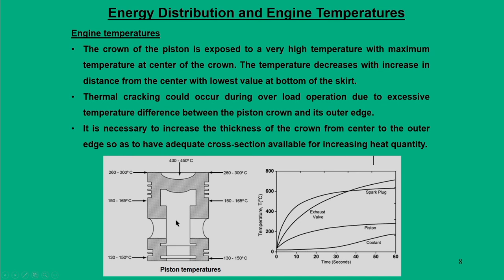A similar plot shows temperatures encountered within the piston — at the crown, piston rings, piston walls, and bottom of the piston. The top of the piston experiences very high temperatures, close to 430 to 450°C. These temperatures go up with continued engine running operation, but not at all locations equally. Because of this, there are always hot spot locations within the engine that need attention.